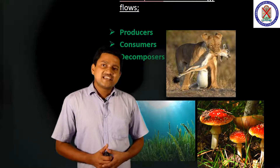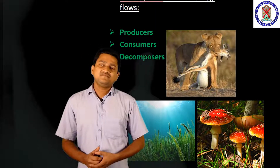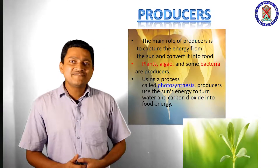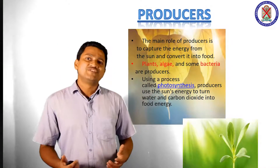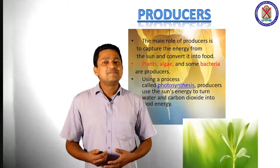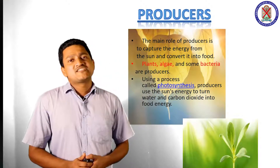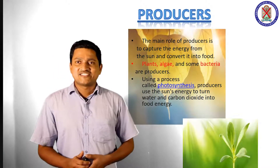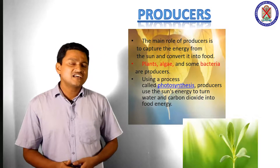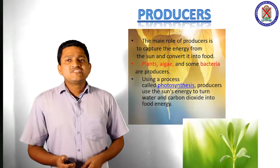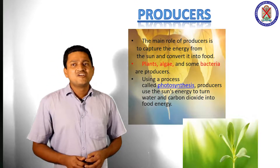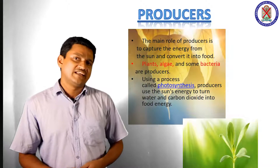First we discuss about producers. The main role of producers is to capture the energy from the sun and convert it into food. Producers capture solar energy and produce energy by a process known as photosynthesis. Plants, algae and some bacteria are producers. Using photosynthesis, producers use the sun's energy to turn water and carbon dioxide into food energy.